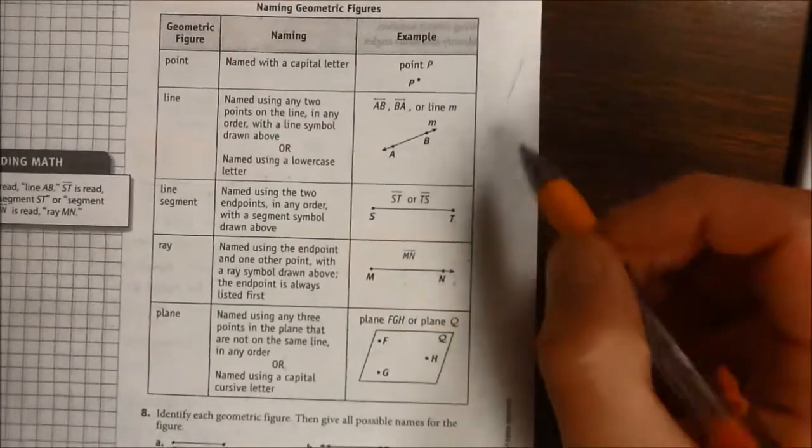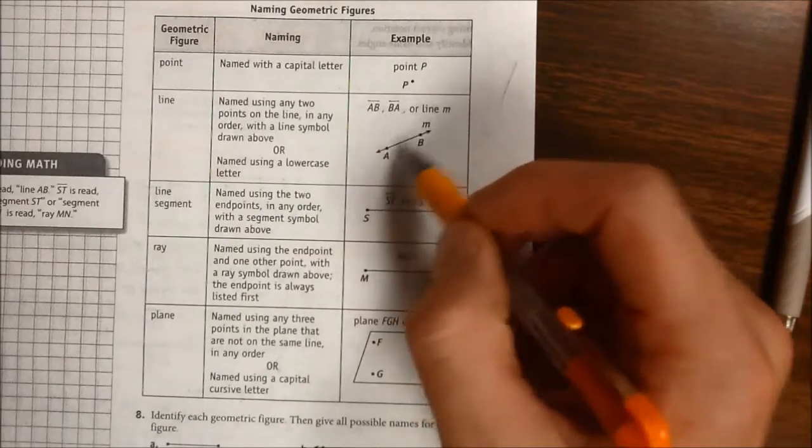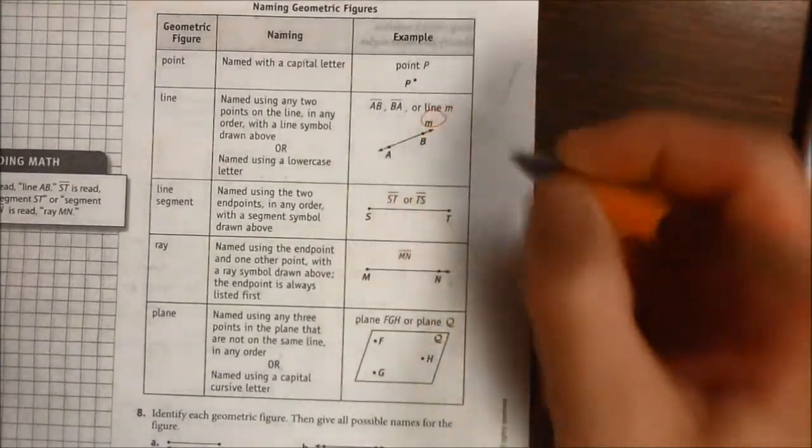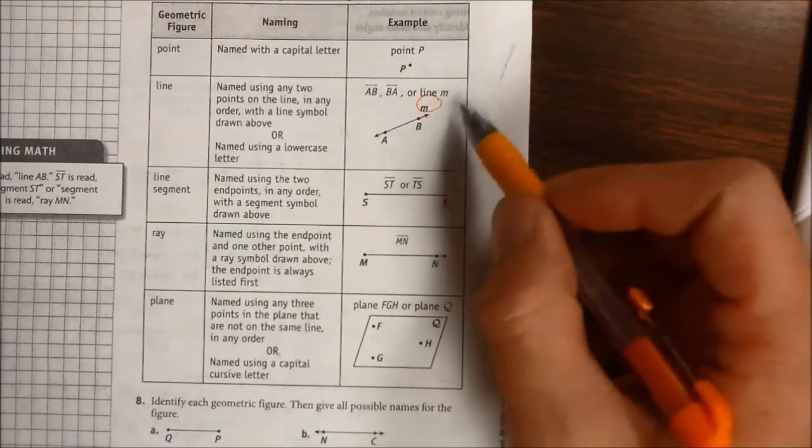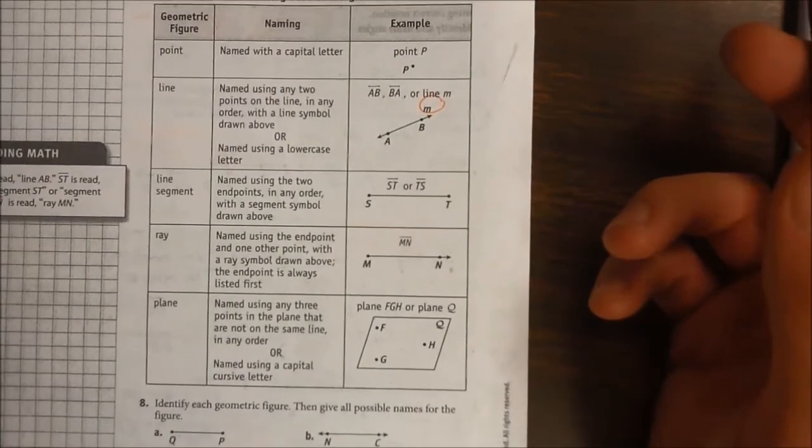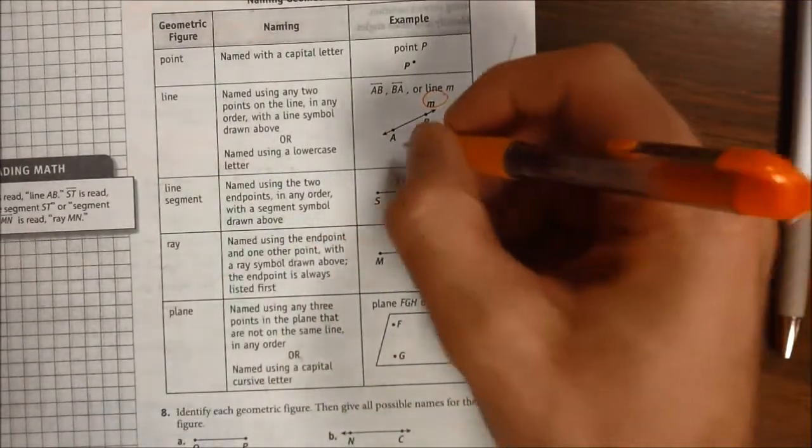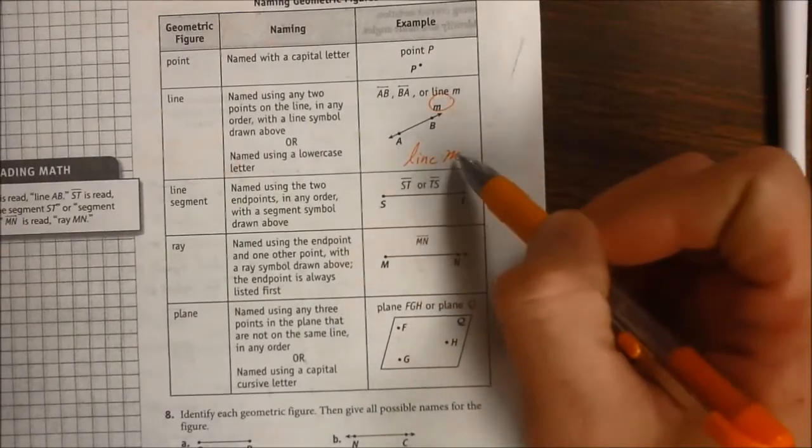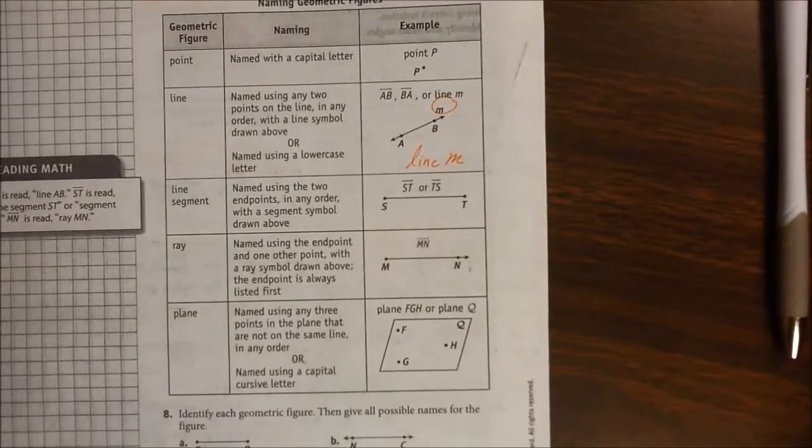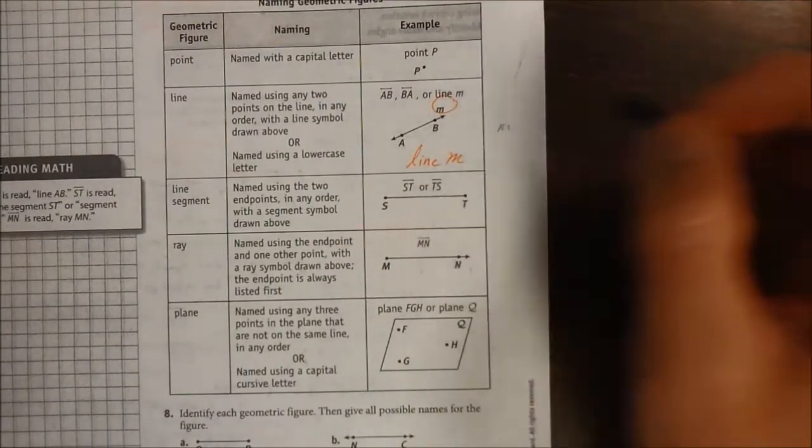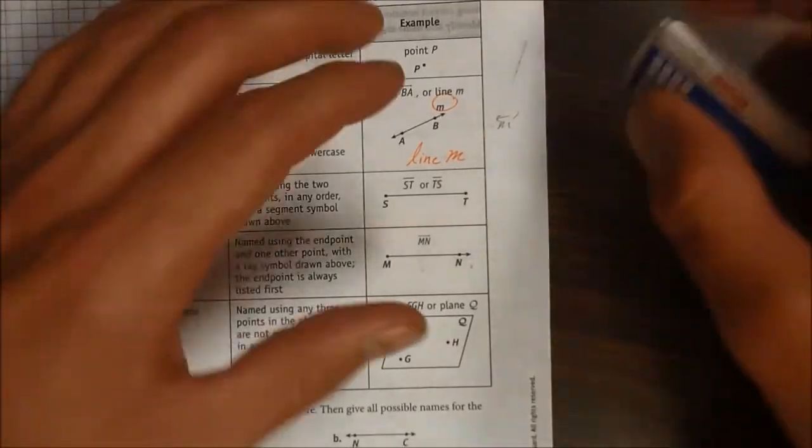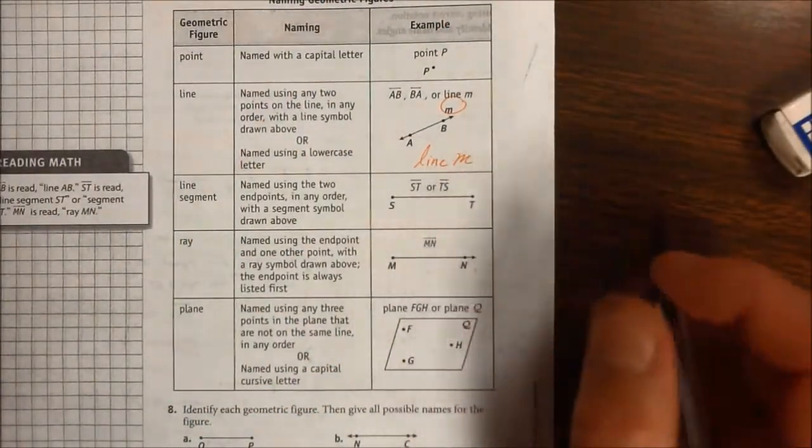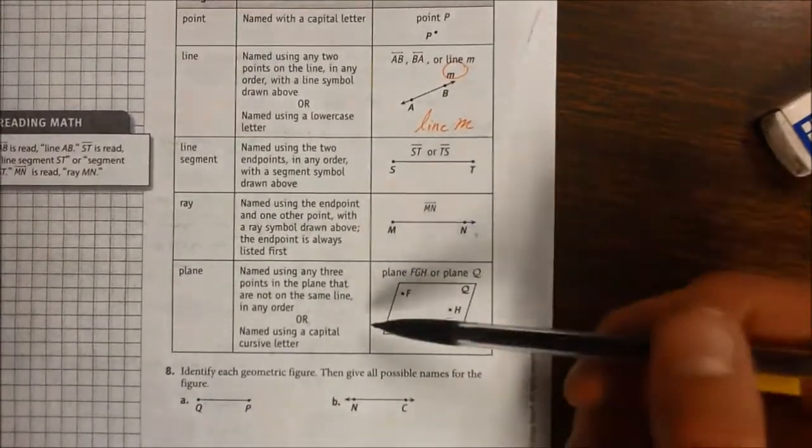This table here has everything that I said, plus one thing that I do want to add is we talked about how you name a line that's with at least two points on that line in any order. So for this, they have line A, B, and they'll have B, A. Those are appropriate names. Sometimes you'll get this lowercase cursive letter that's near the line, and that's an appropriate way to name it. And when you write it out, you have to write out the word line and then that lowercase letter. So this is line M. Do not ever put that lowercase script letter and then put a line over it. I don't ever want to see that. That is wrong. If you're going to use the lowercase letter, you need to write out the word line and then follow it by whatever lowercase letter it is. Here's talking about segment and then ray and plane.